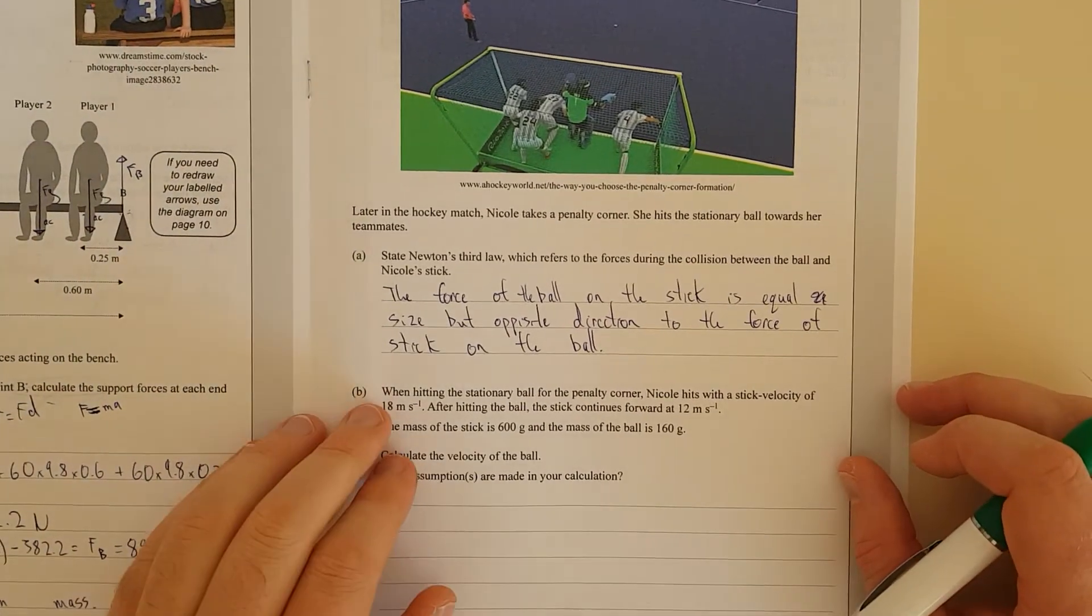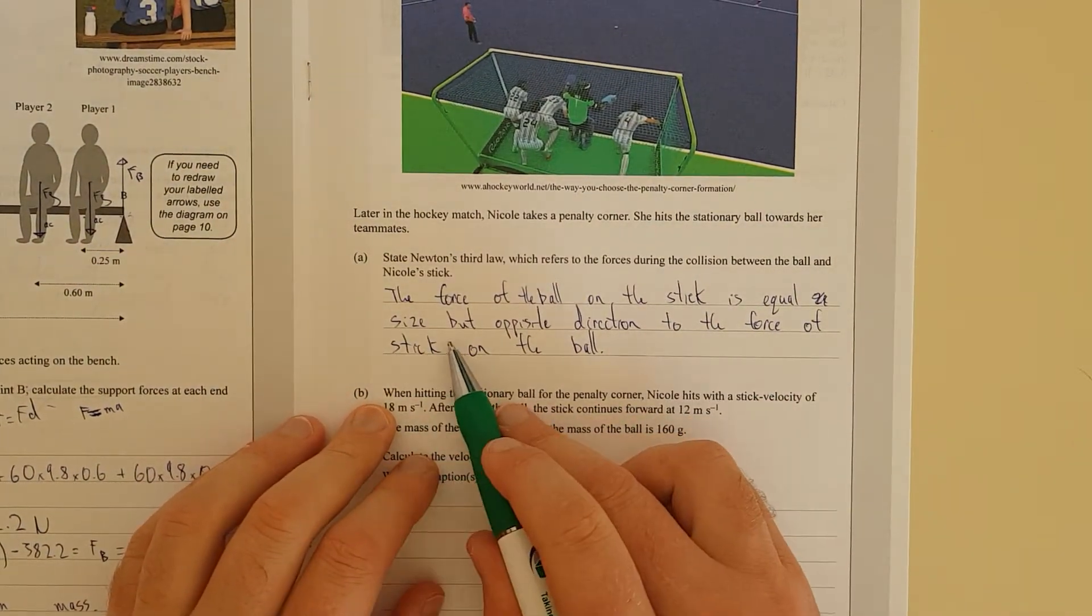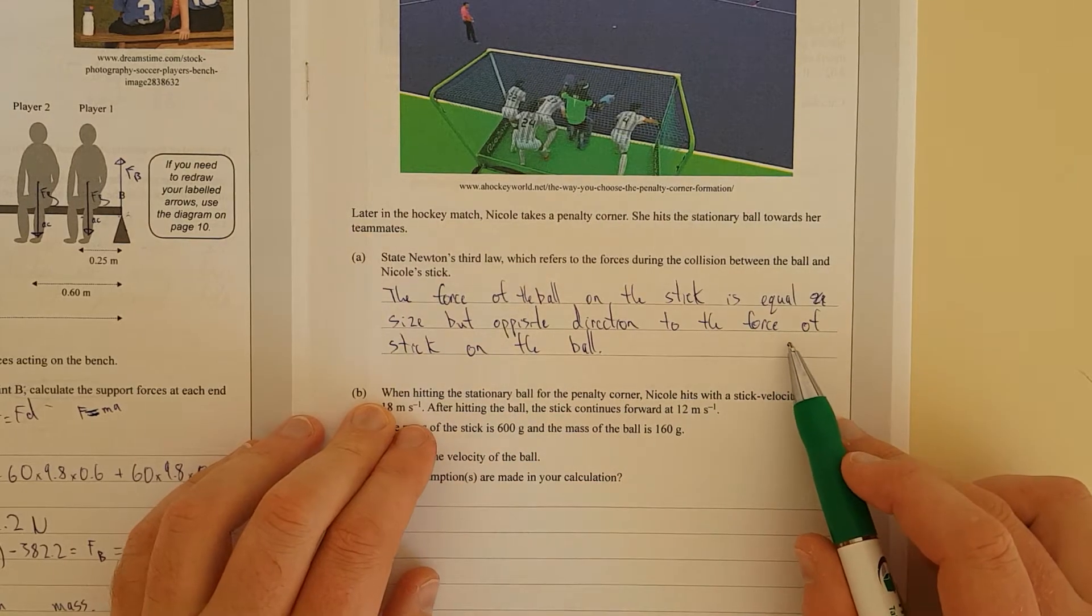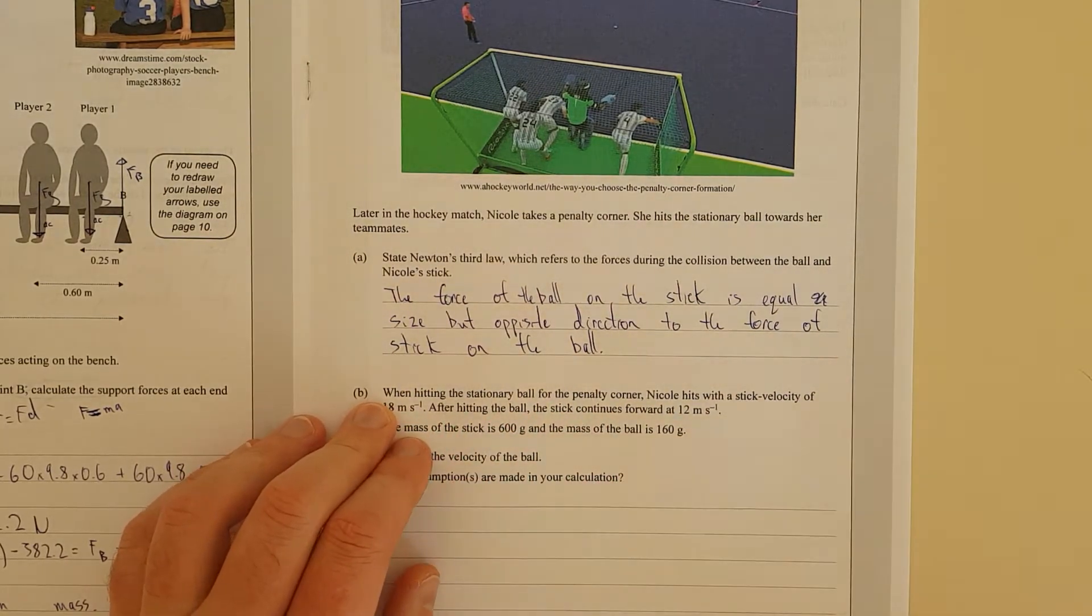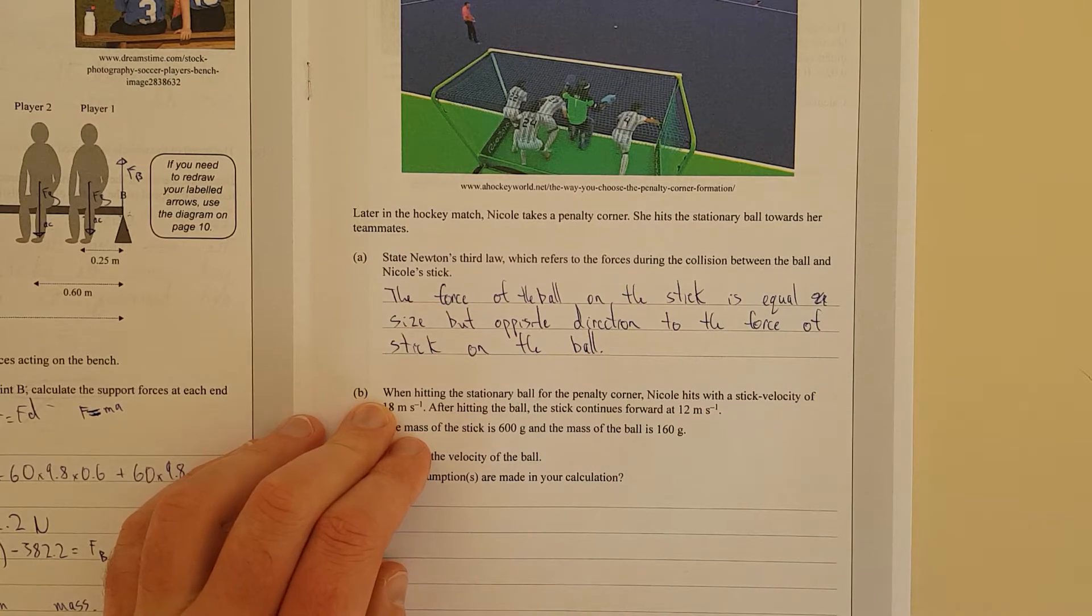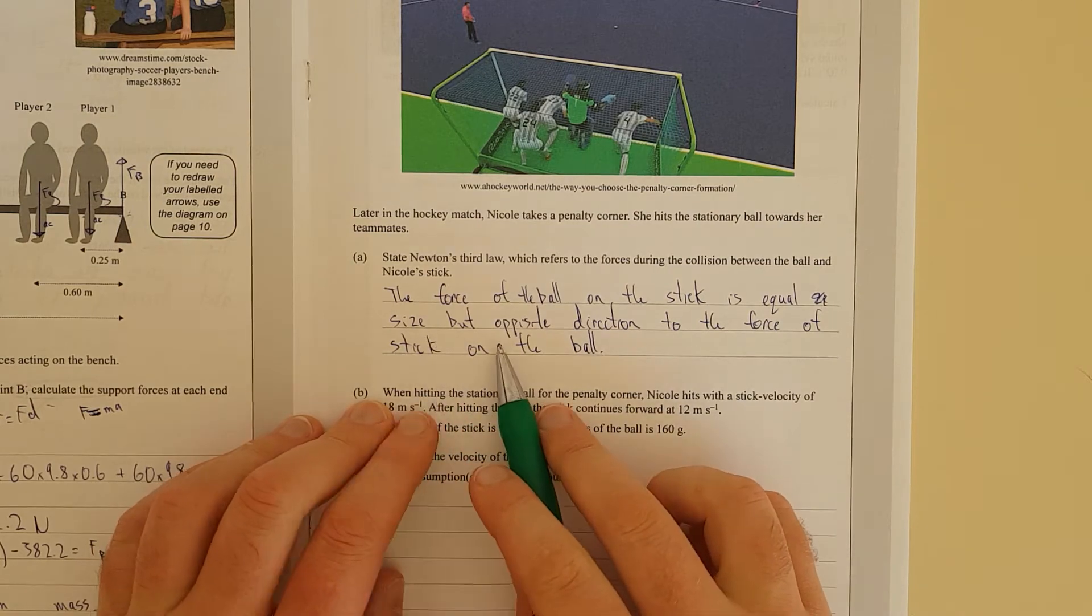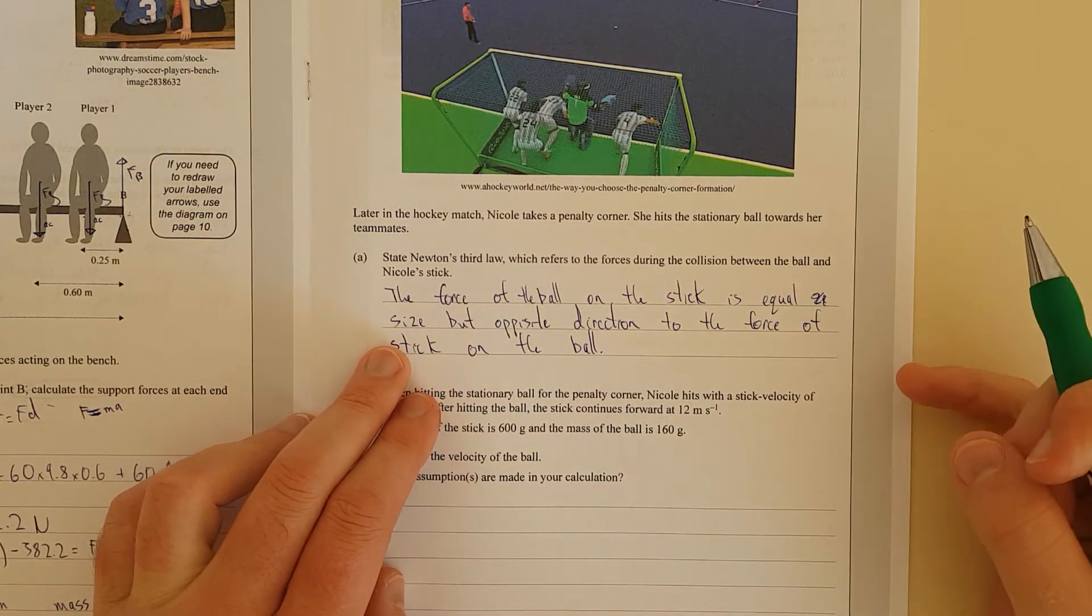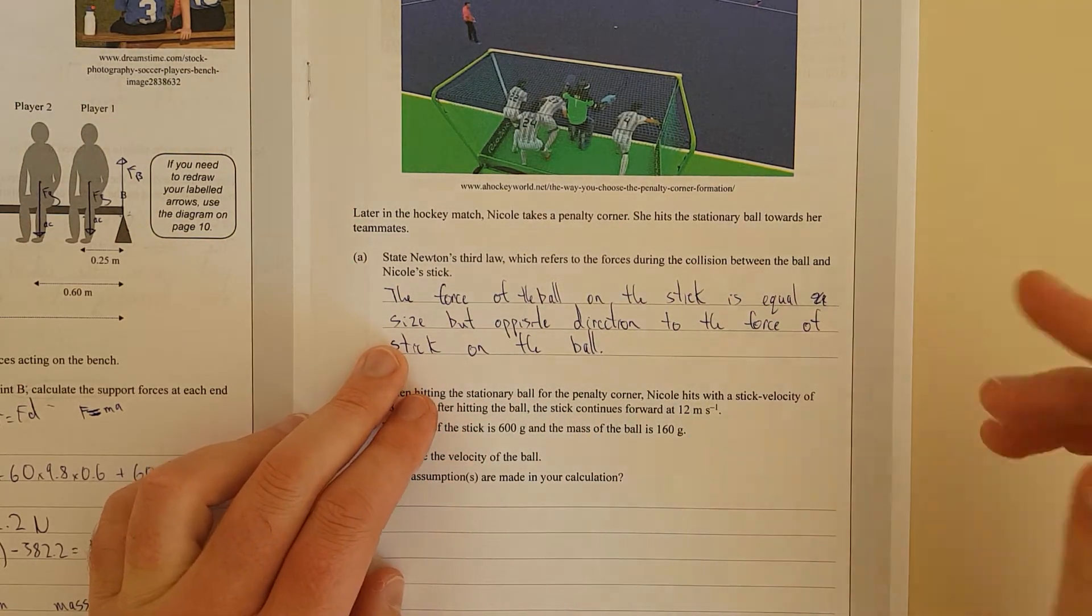Right, so I've said the force of the ball on the stick is equal size but opposite direction to the force of the stick on the ball. This is not the first time I've ever seen a state Newton's law question. I'm pretty impressed with it actually. Newton's law is just like a whole equal and opposite forces thing. But you've got to try and be succinct about it by talking about the size and the direction because it's a vector, it has size and direction.